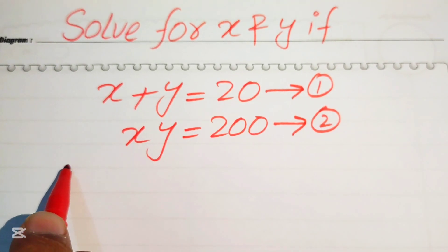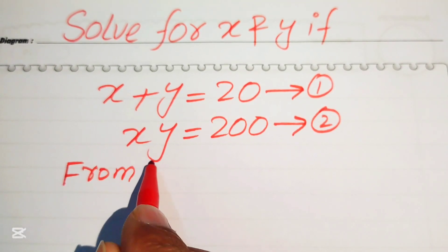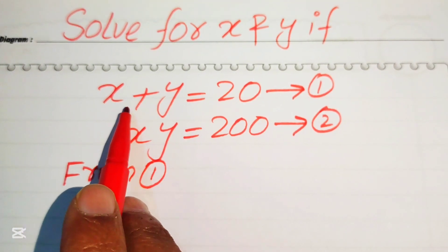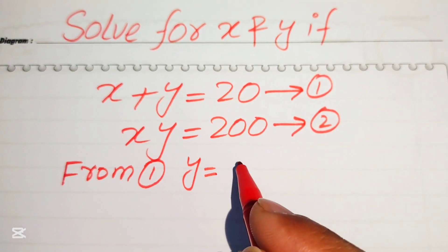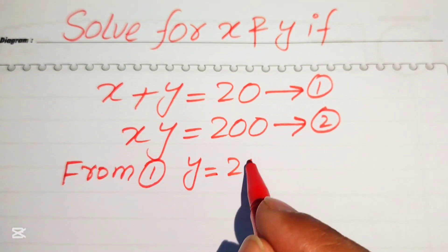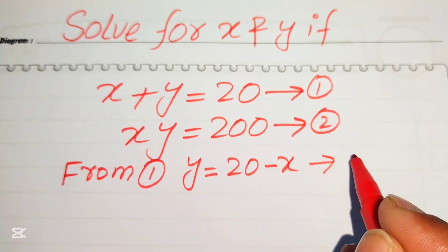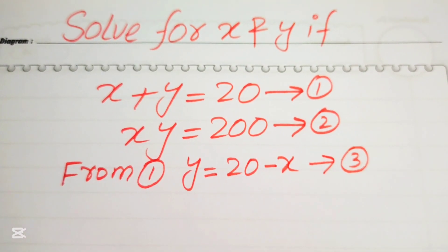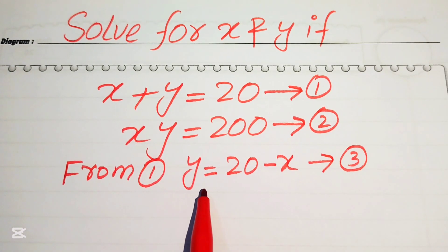First we focus on equation number one. From equation number one, we need to move x to the right hand side, and we get the value of y equals to 20 minus x. We call this equation number three.